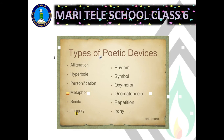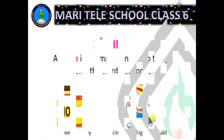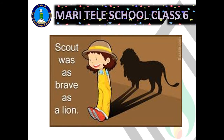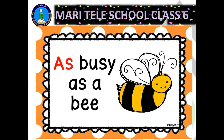The first one is simile. A simile is a comparison of two things using the words 'like' or 'as'. Examples could be 'as sweet as honey', 'he was racing like a frightened rabbit', or 'Scout was as brave as a lion' — here the phrase shows the bravery of the scout. Another example could be 'as busy as a bee'.